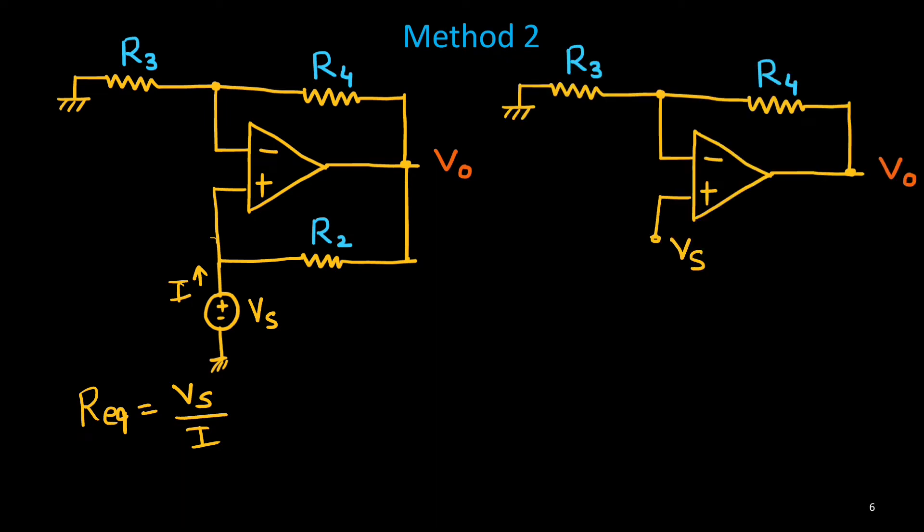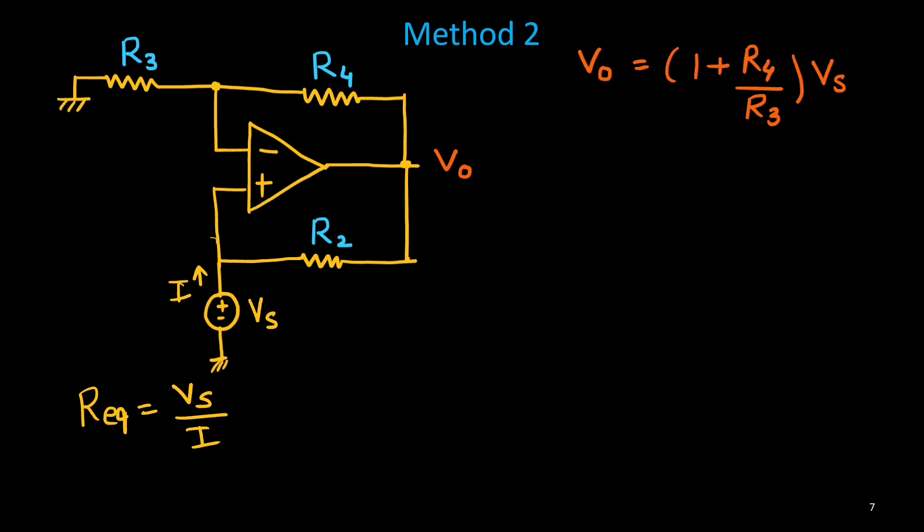Now, I will consider this one. So, this potential is Vs. This is your ground. This one is V0. So, this circuit is a non-inverting amplifier. And we know that gain is 1 plus RF by R1. In this case, 1 plus R4 upon R3. That is the gain. So, output voltage V0 will be 1 plus R4 upon R3 times Vs. So, V0 is now available with respect to Vs. This is your expression for V0.